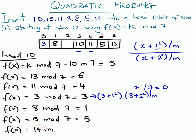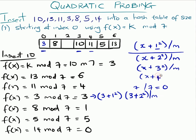For the last one we have 14: 14 mod 7 is 0, but position 0 is already occupied. We use the first formula — n goes from 1 to any number needed. Using n=1: 14 + 1² = 15, and 15 mod 7 is 1. But position 1 is already filled.